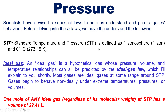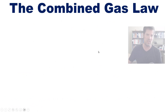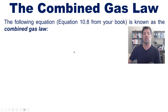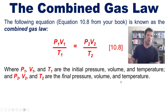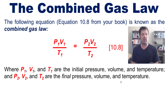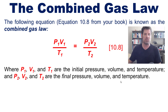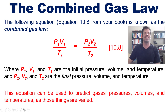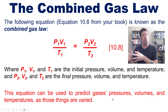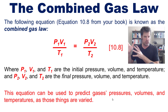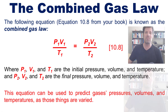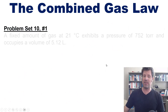One of the mathematical laws we'll use for gases is called the combined gas law — equation 10.8 from our text — where P1, V1, and T1 are the initial pressure, volume, and temperature, and P2, V2, and T2 are the final pressure, volume, and temperature in any gas system that experiences adjustment. The beauty of this equation is that it allows us to predict a gas's new pressure, volume, or temperature if we vary any of those things from initial conditions.